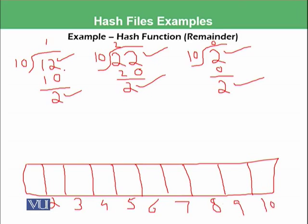So the record number 12, 22, and 2 all will be stored in the second bucket. This means whatever the number comes, we will take remainder with 10. And whatever left, we will store that remainder will tell us that in which bucket that number should be stored.